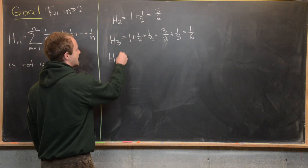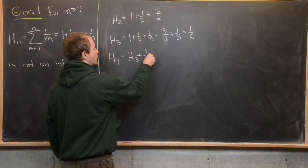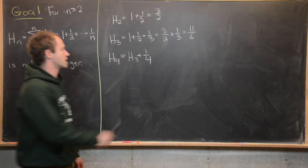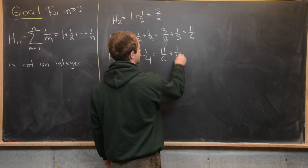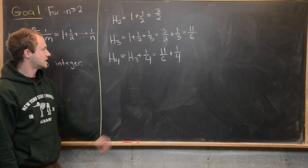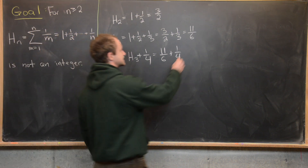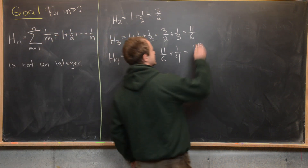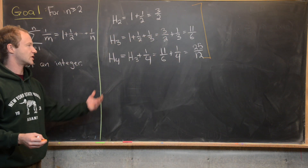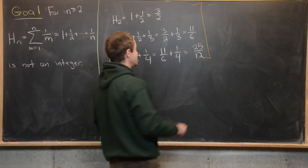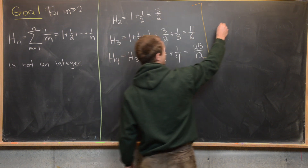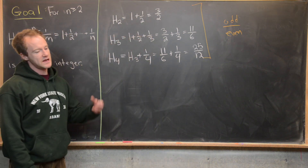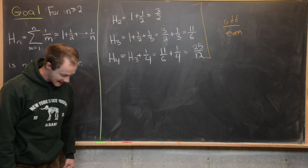Let's do two more. H4 is really H3 plus 1/4, using this recursion on harmonic numbers. That's 11/6 plus 1/4, with common denominator 12: 22/12 plus 3/12 equals 25/12. That's a good place to stop, because the structure we see is that after reducing to lowest terms these all appear to be an odd number over an even number. So we'll show that the nth harmonic number, for n not equal to 1, written in lowest terms is of the form odd over even.